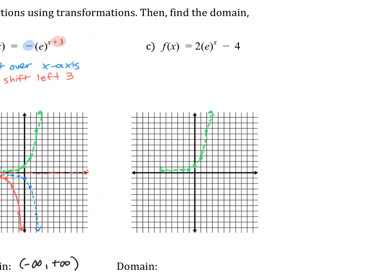Let's look at this last one. We always start with any transformation involving multiplication. This 2 is a vertical stretch by a factor of 2, which means all of our y values will double. So the first point doubles, 1 doubles to 2, and doubling the last point would go off our graph. This is good enough for our first transformation. I'm going to leave it dotted because we're not done yet — we still have that minus 4.